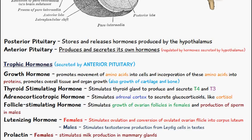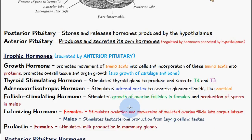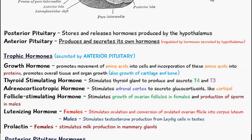Luteinizing hormone, in females, stimulates ovulation and conversion of the ovulated ovarian follicle into the corpus luteum. In males, it stimulates testosterone production from Leydig cells in the testes. Lastly, prolactin stimulates milk production in the mammary glands in females.